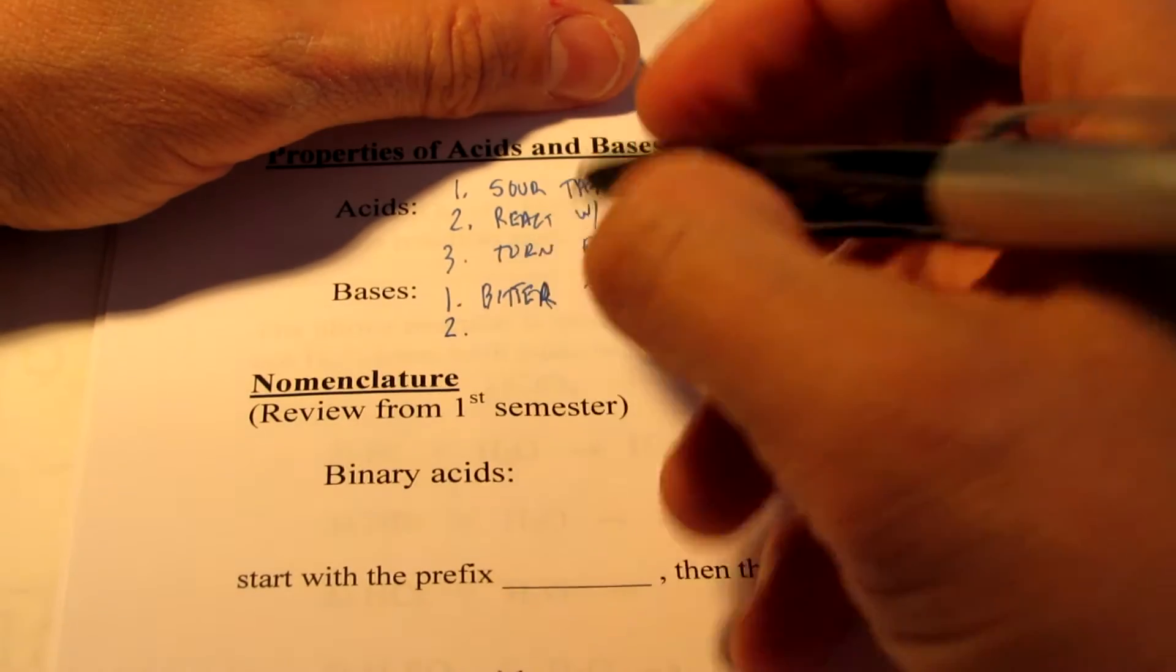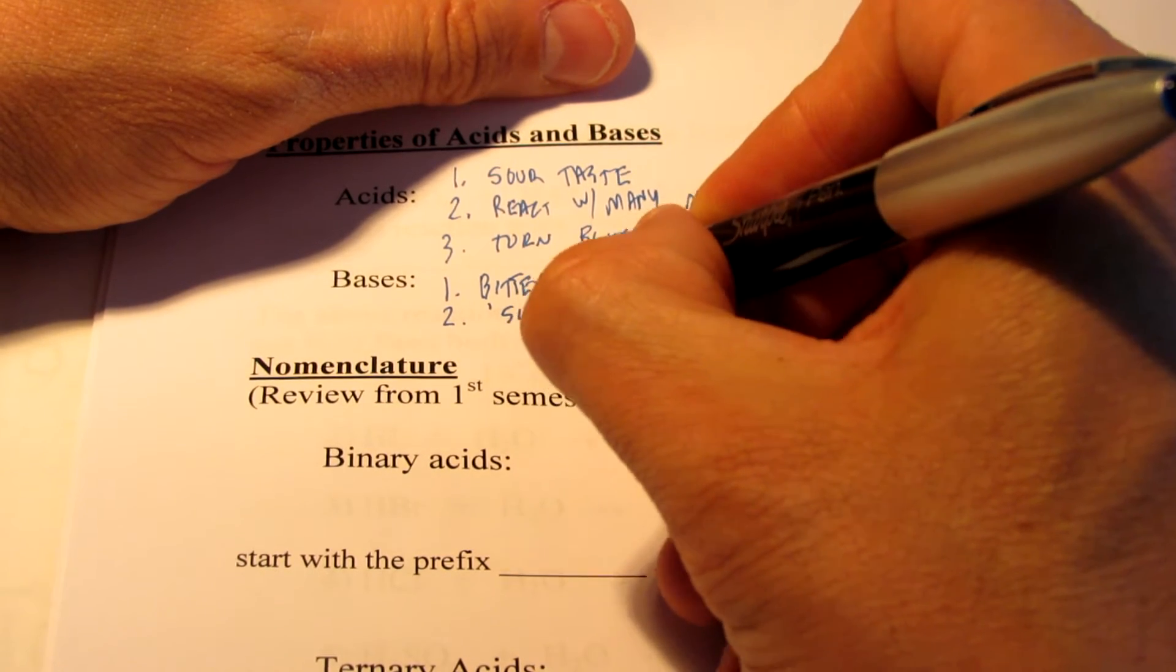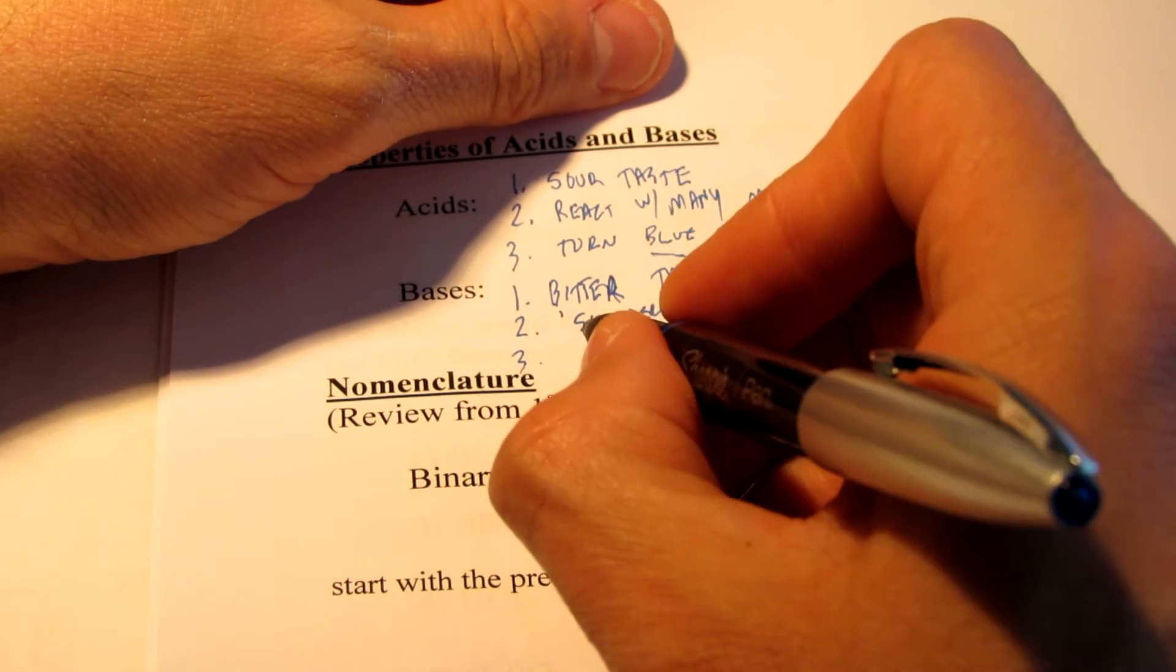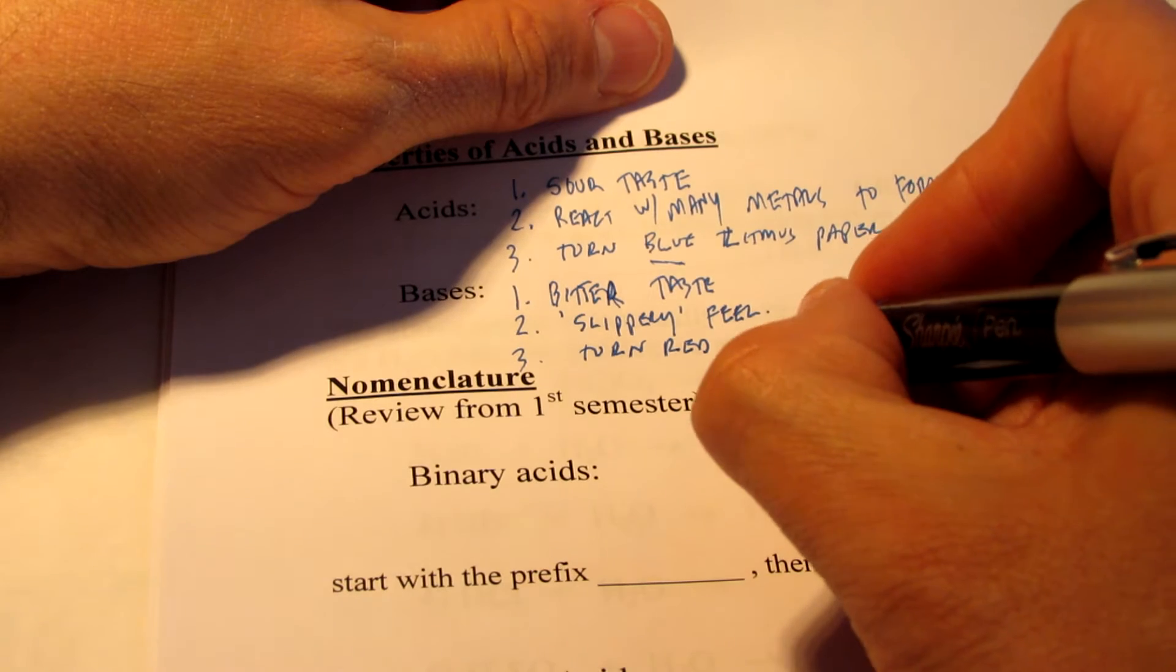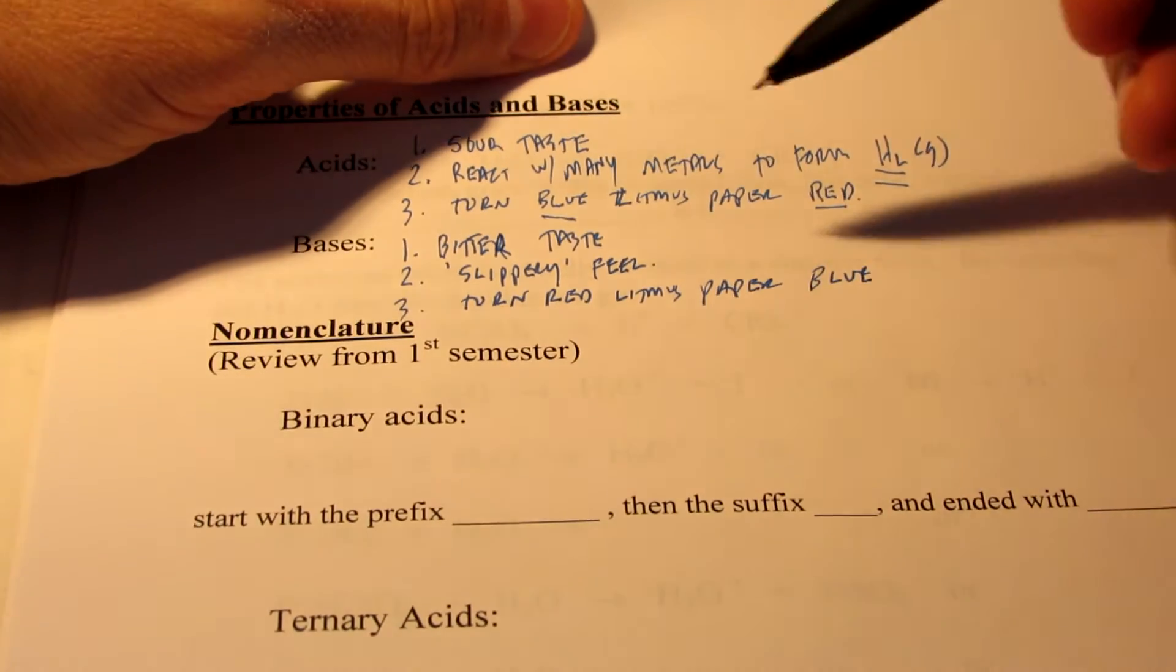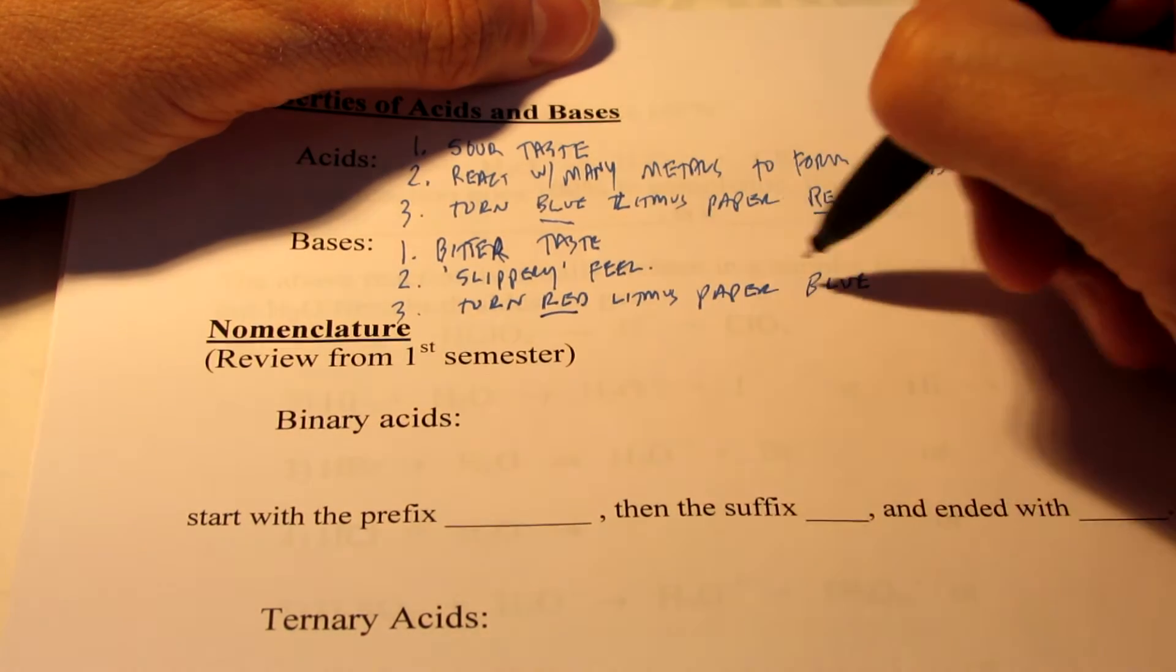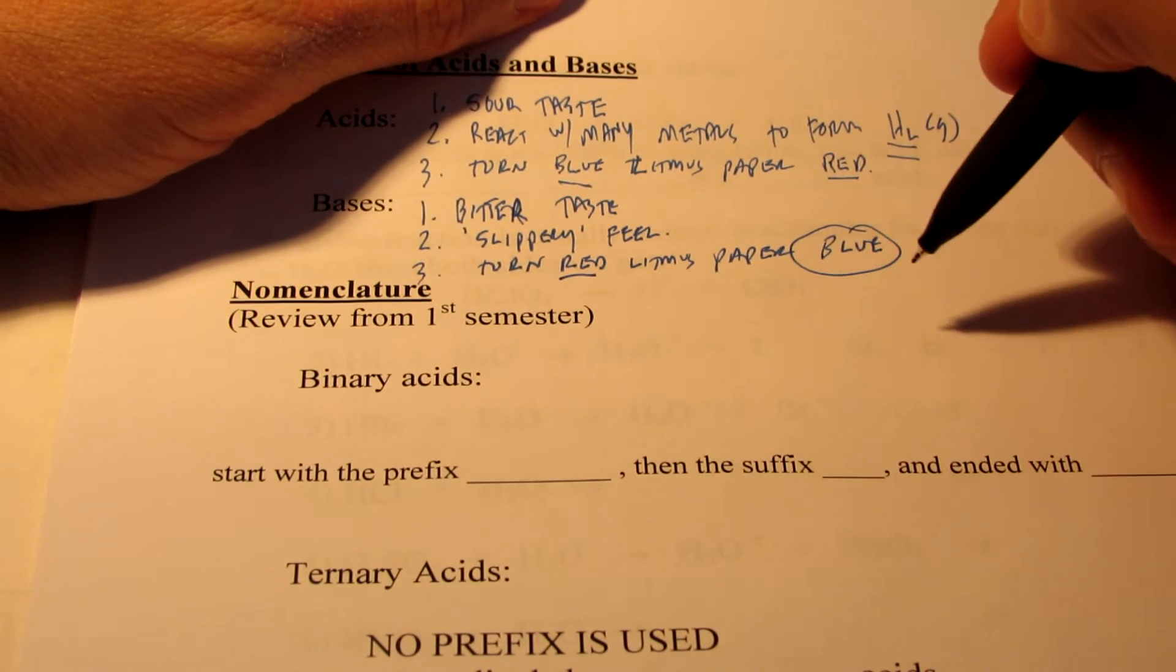Number two, bases have a slippery feel to them. They feel slippery. And number three, bases will turn red litmus paper blue. So the opposite of what acids did. We can conduct a litmus test on a solution to find out if it's basic. If it turns red litmus paper blue, we know we have a base on our hands. And I'll demonstrate those two to you in class.